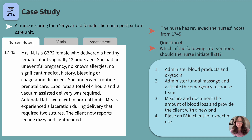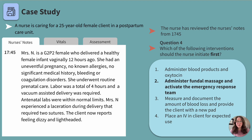Let's review each option. The nurse should anticipate administering blood products and oxytocin, but there may be better first interventions. Activating the emergency response team would provide immediate response, but let's keep reading. Measuring and documenting blood loss and providing a new pad is important, but is it the priority? Placing an IV is always handy but not the immediate priority. After reviewing all choices, the first intervention should be fundal massage while also activating the emergency response team per hospital protocol.